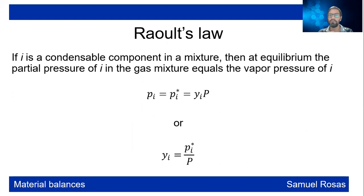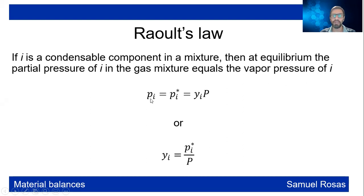When you have a mixture of components — for example, water and air, which is very common — and there is one condensable component (water will condensate, air will not), then at equilibrium the partial pressure of component i (water) in the mixture equals the vapor pressure. So the partial pressure equals the vapor pressure, which equals the mole fraction Y times total pressure P. In other words, the mole fraction equals the vapor pressure divided by the total pressure. This is some theory about multi-phase systems. Thank you very much.